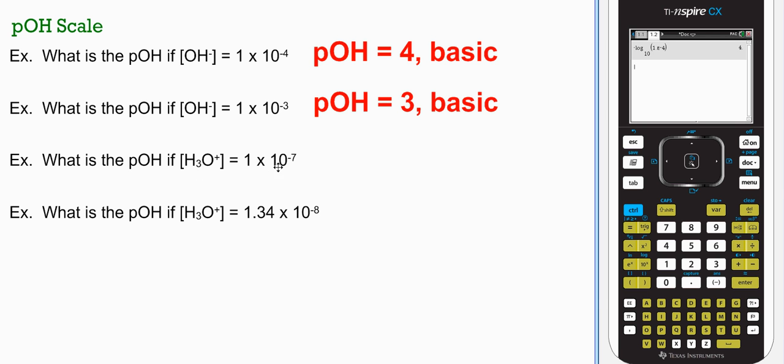Find pOH if hydronium is 10^-7. Well, you know 10^-7 would be a pH of 7, which is neutral anyway, so pOH would also be 7.